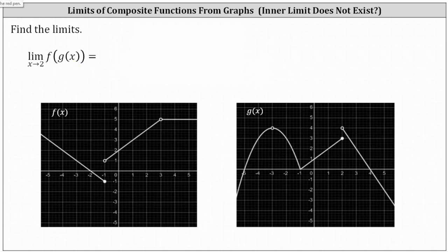Looking at g of x, we're approaching x equals two, where we have this discontinuity. Notice as we approach x equals two from the left, we're approaching a y value or function value of positive three. As we approach from the right, we're approaching a y value or function value of positive four. This indicates the limit as x approaches two of the inner function g of x does not exist.